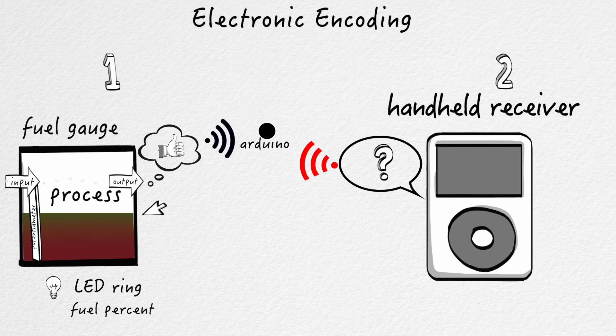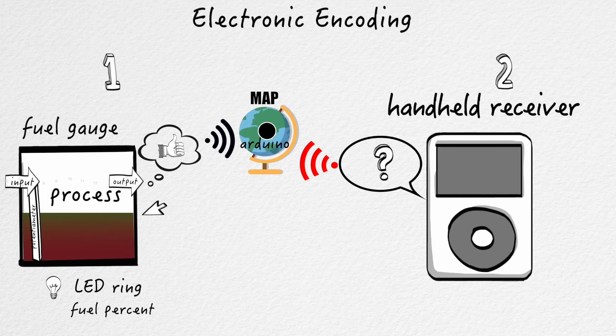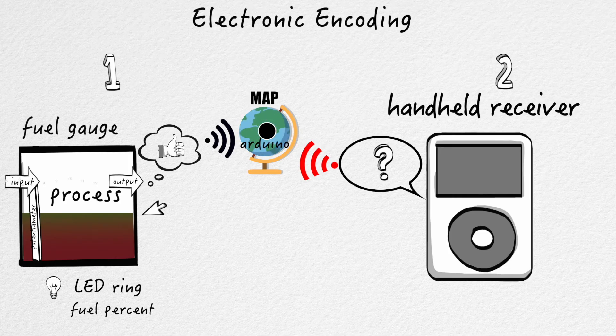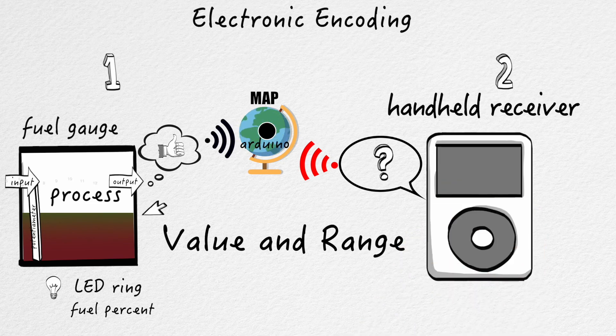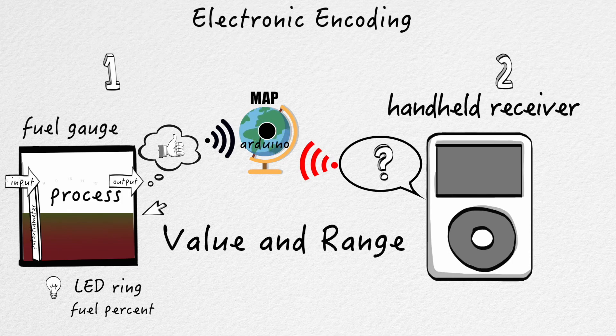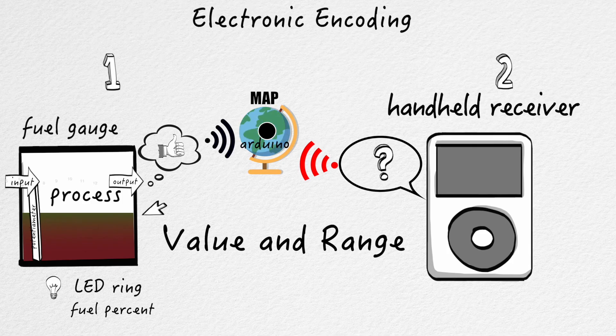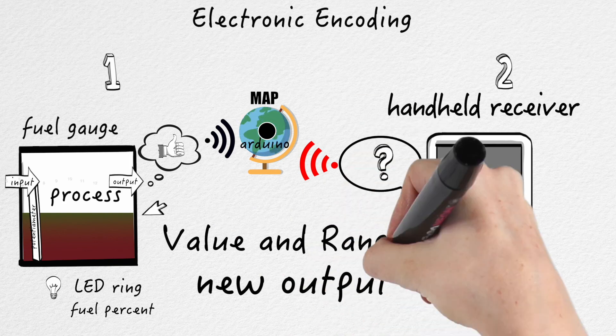The way that we did this was using a process called map. The Arduino code actually has this as a built-in function. Essentially what we can do with map is that we can give it a current value and that current value's possible range. So, in our case, that was the value from our potentiometer, and then the range, 0 to 1023. And then we can give it a new range, and then using its math on the back end, we don't have to touch any of the scary math, it figures out what that new output is.